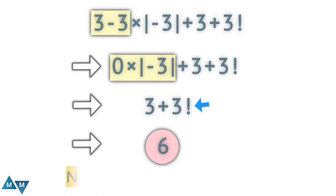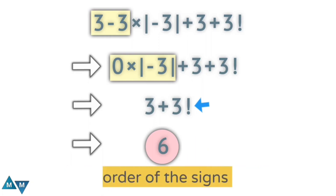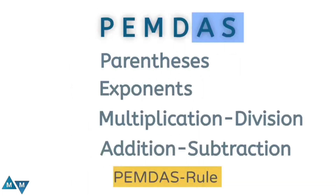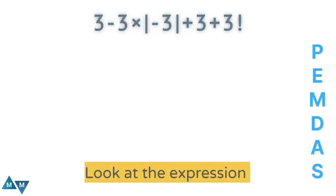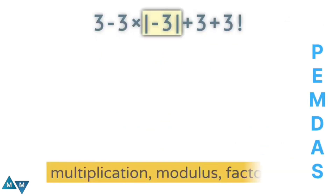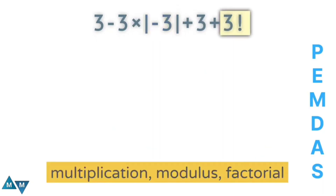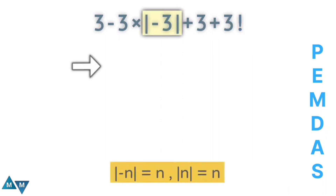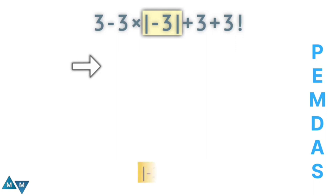Let's see the correct way. You have to be careful with the order of operations. Here we use PEMDAS rule. The expression has a minus sign, plus signs, multiplication, a modulus sign, and a factorial. Let's first solve the modulus part. The modulus of a number is its absolute value — we disregard any sign. So the modulus of minus three gives three. We replace this part with three.